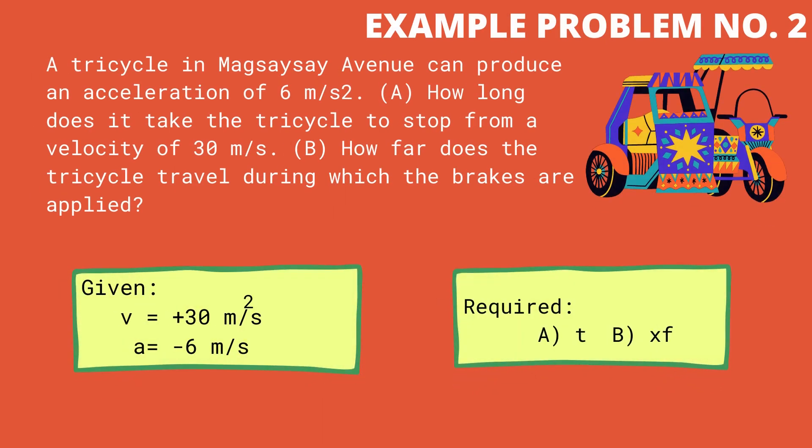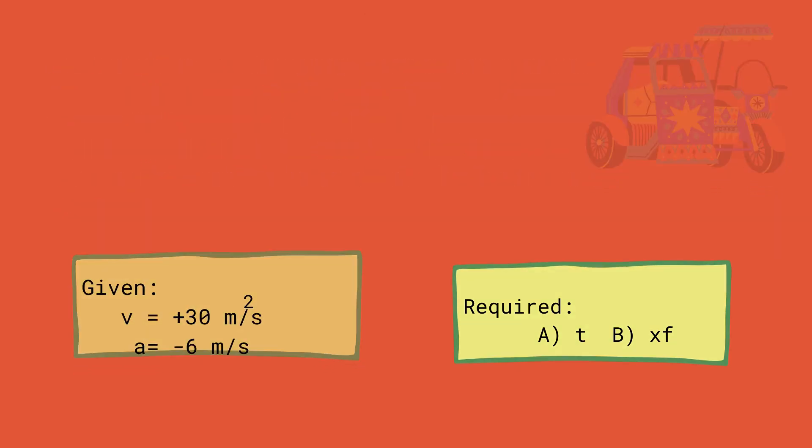The given in this problem are the following: velocity is equal to positive 30 meter per second, while the acceleration is equal to negative 6 meter per second squared. The unknown quantities are, for letter A, it is the time, while for letter B, it is x sub f.